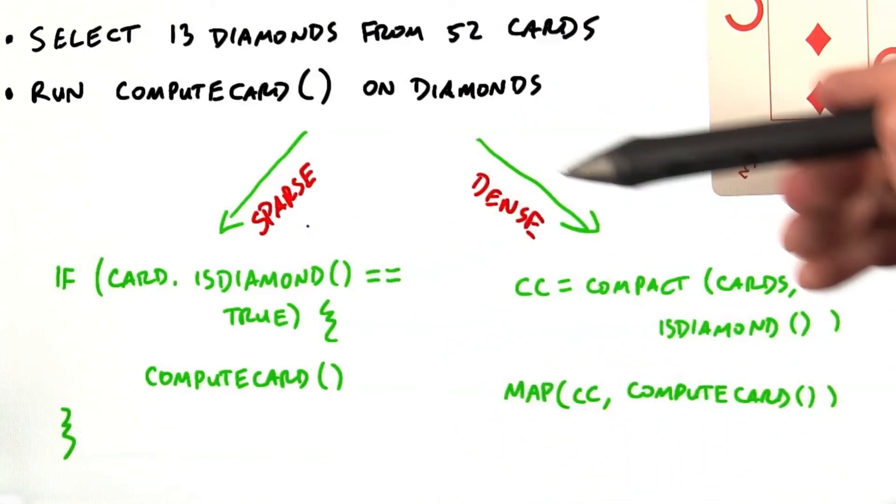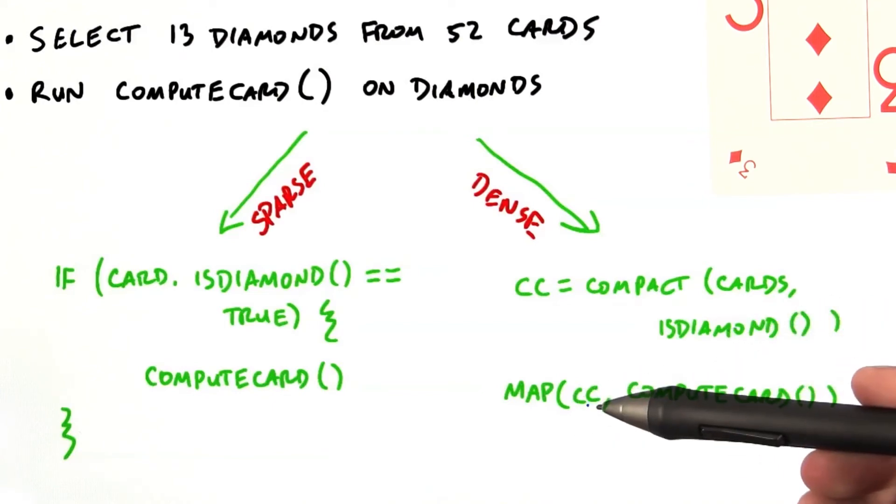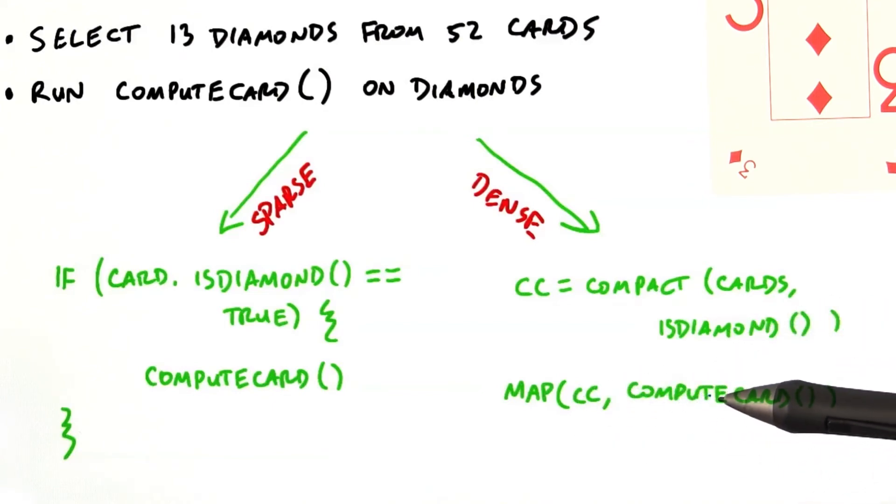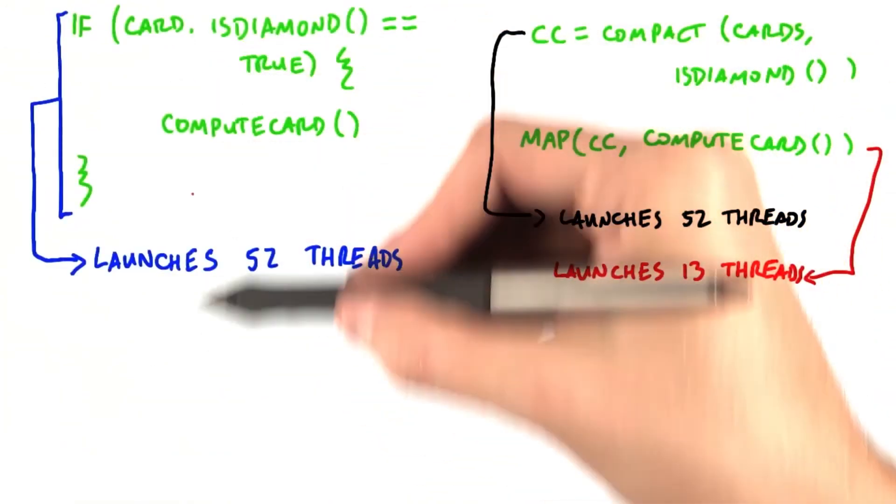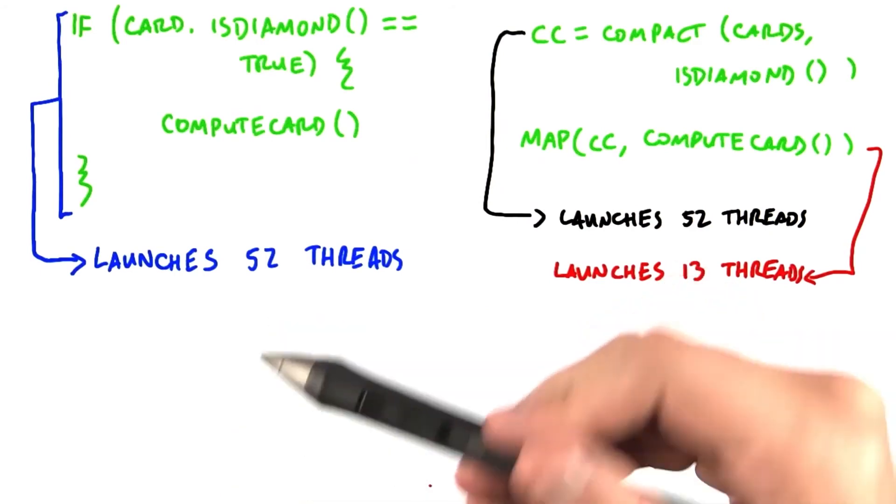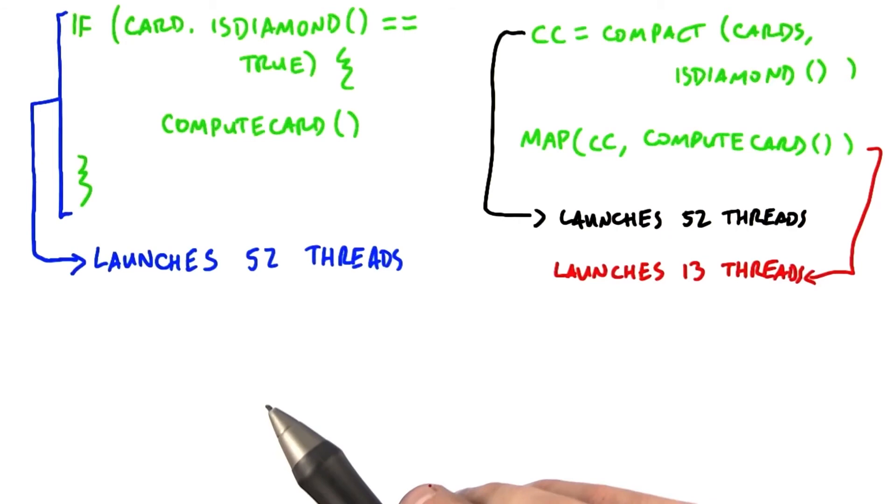Or, we could run a compact on the deck of 52 cards to get back 13 diamonds by running compact on the cards using the isDiamond predicate, and then run a map on the compacted cards calling compute card only on the diamonds. Note that the sparse computation is going to launch 52 threads, one per card, and 39 of those threads will be idle.